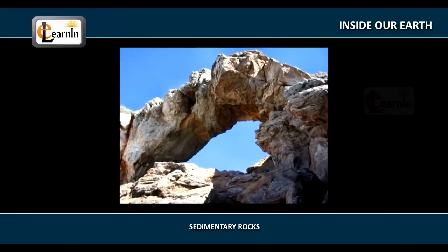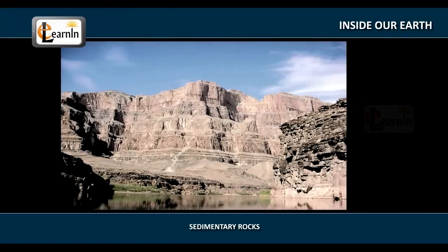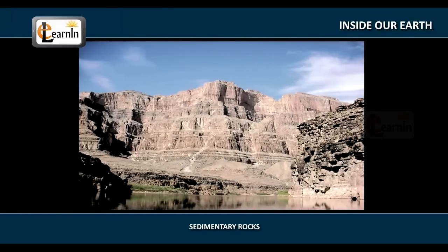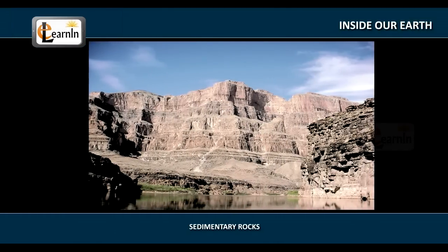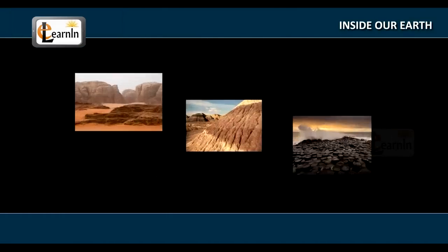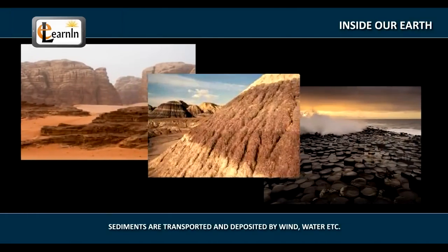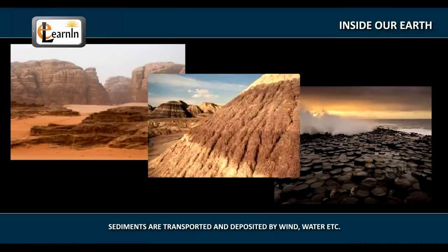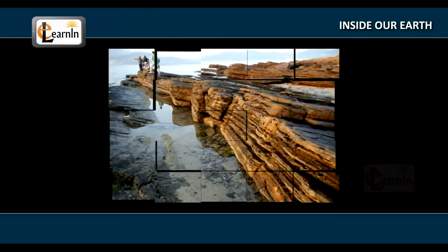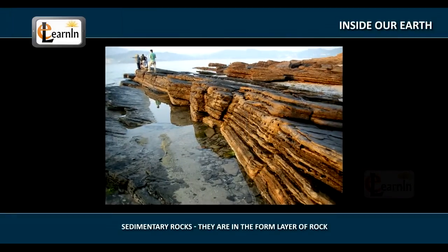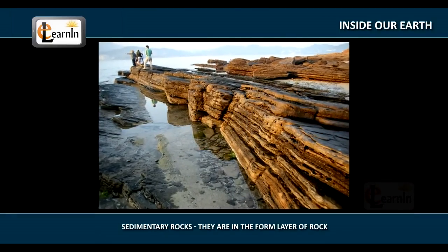Sedimentary rocks are formed by a process when rocks roll down and hit each other and crack, forming sediments. These sediments are transported and deposited by wind, water, etc. They harden to form layers of rock, called the sedimentary rocks.